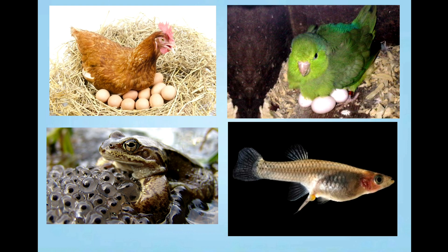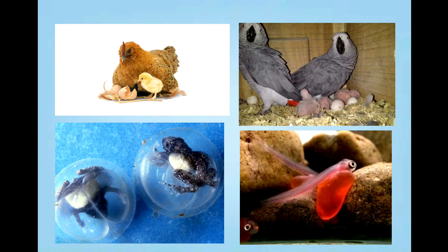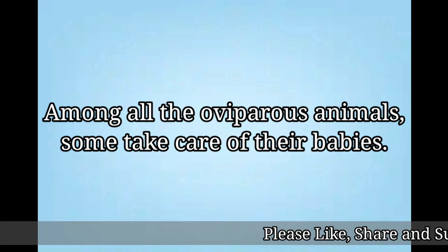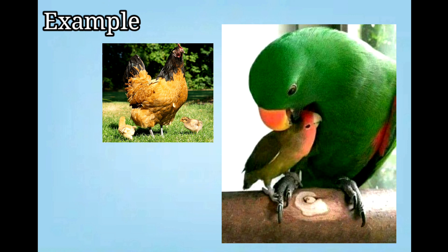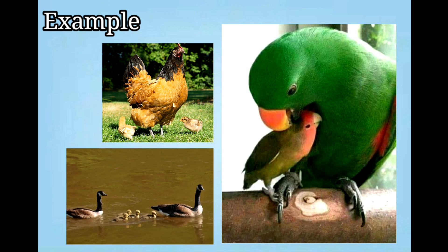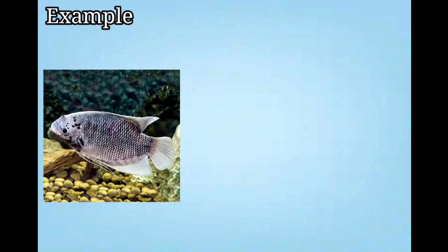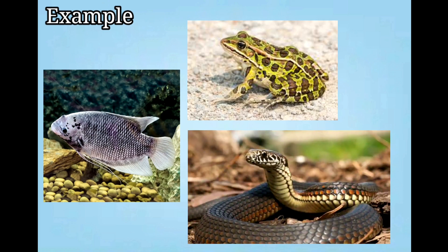These animals lay eggs and hatch their babies. Among all oviparous animals, some of them take care of their babies. For example, hen, parrot, and goose take care of their eggs and babies and protect them. But some oviparous animals like fish, frog, and snake do not take care of their eggs and babies.